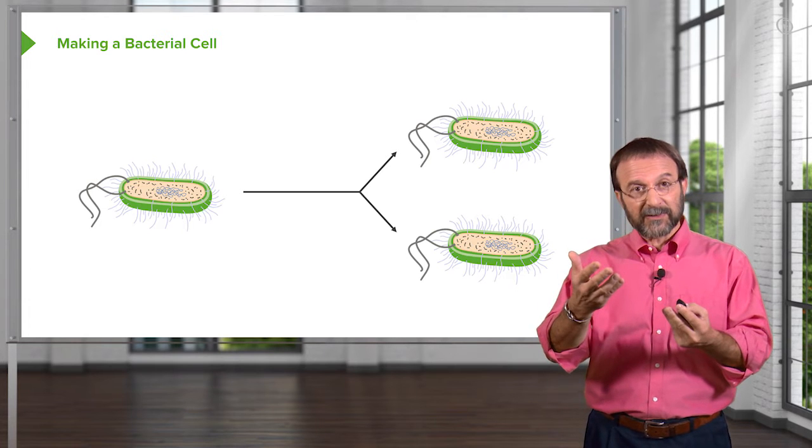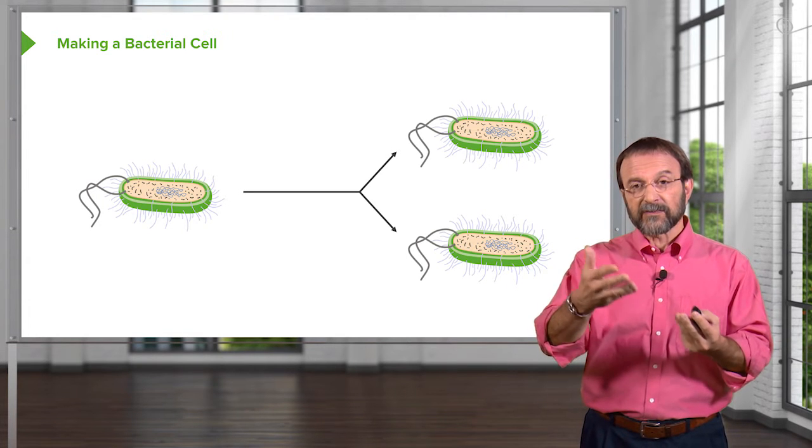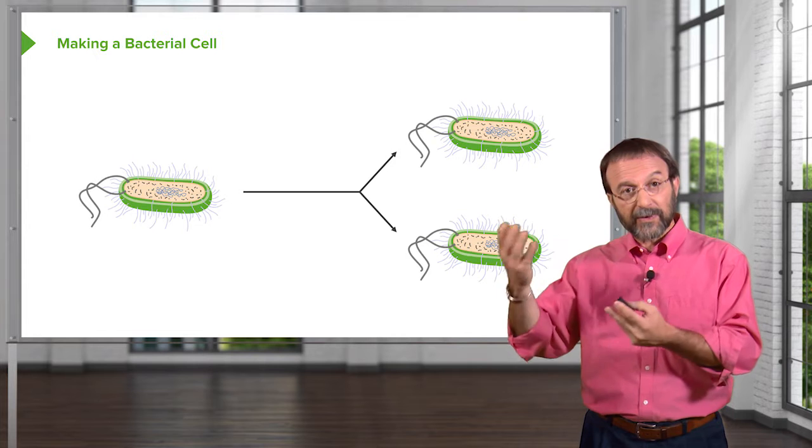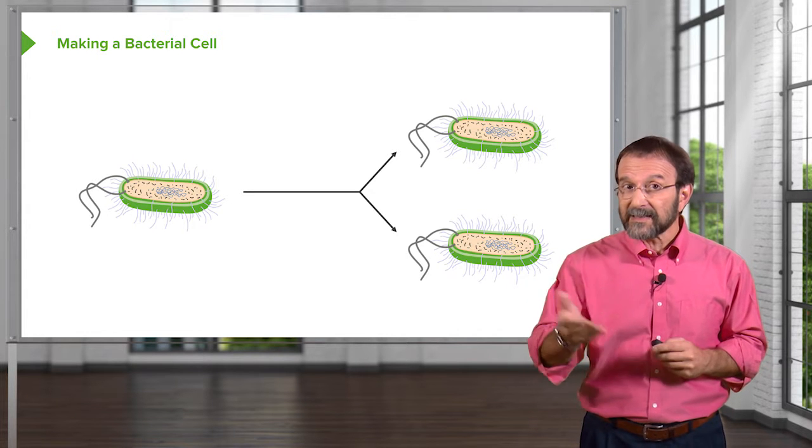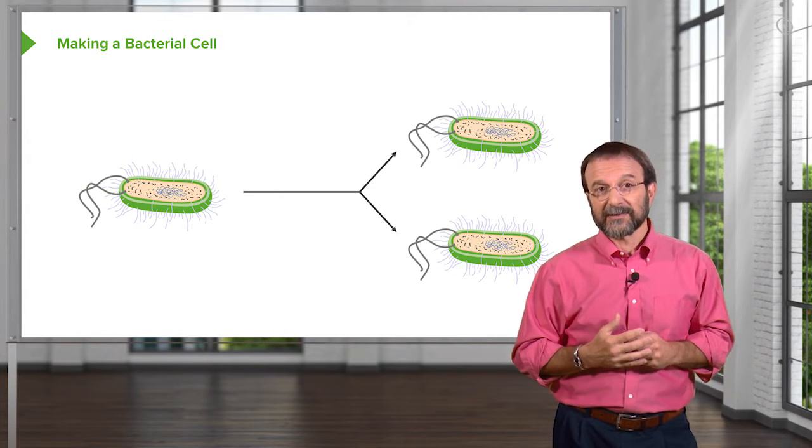Those two cells would in turn divide again, so we would go from two to four, and from four to eight, and so on. So you can see that very quickly we'll have a lot of bacterial cells.